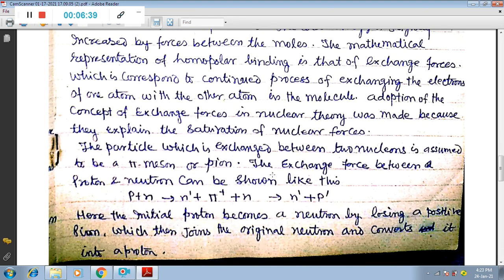The particle which is exchanged between two nucleons is assumed to be a pi-meson or pion. The exchange force between a proton and neutron can be shown like this: Here is an interaction that is P plus N going to convert into N-dash plus pi-plus plus N. It means the proton is converting by emitting a pion; it is converting into N-dash.